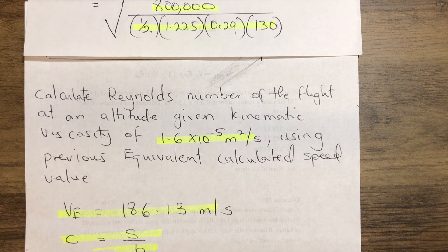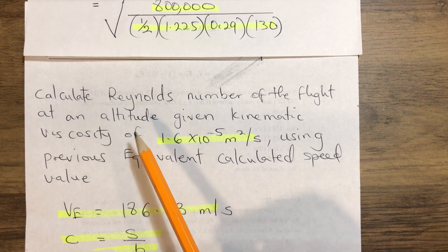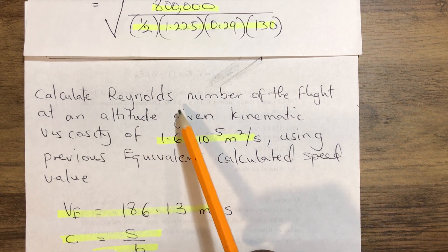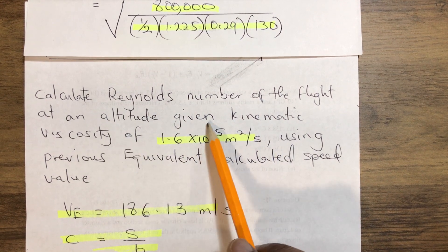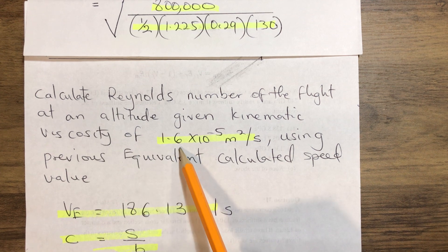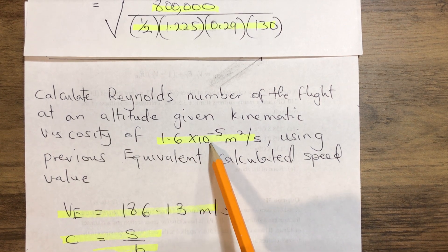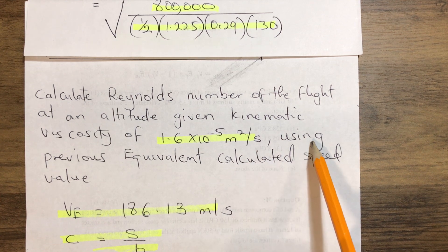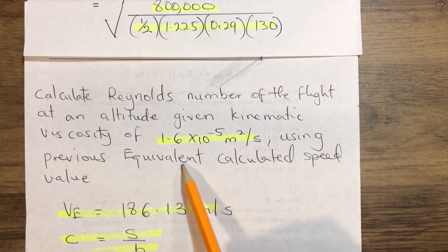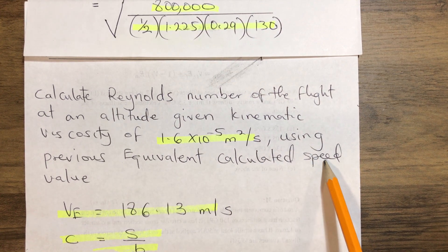Now let's go to our question. Calculate Reynolds number of the flight at an altitude given kinematic viscosity of 1.6 times 10 raised to power minus 5 meter squared per second using the previous equivalent calculated speed value.